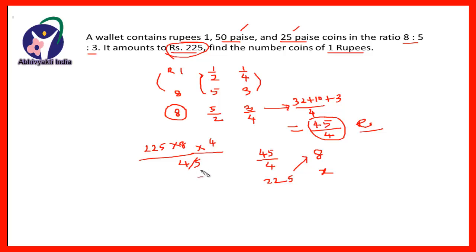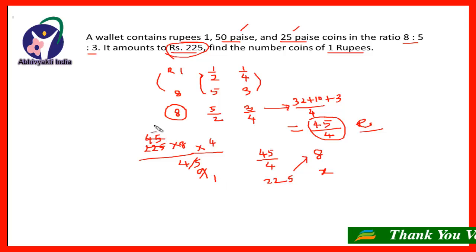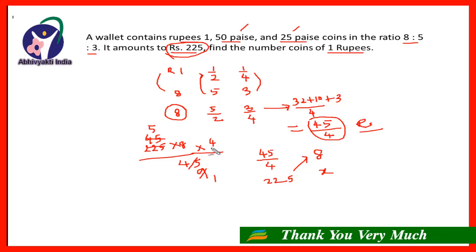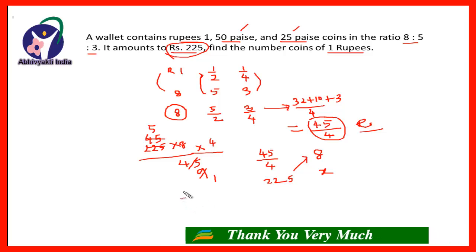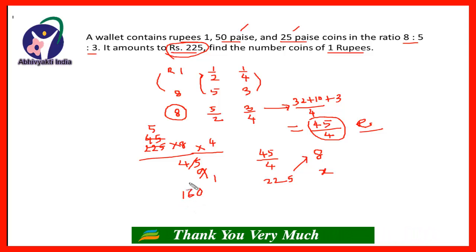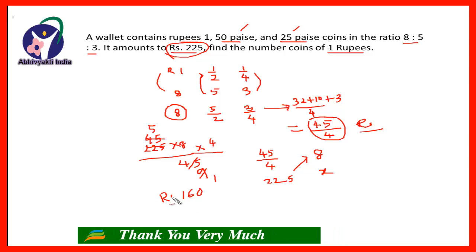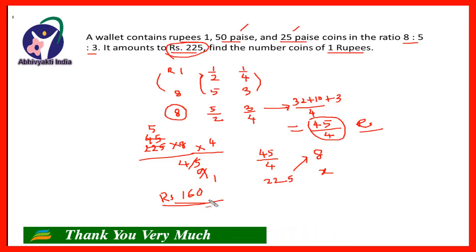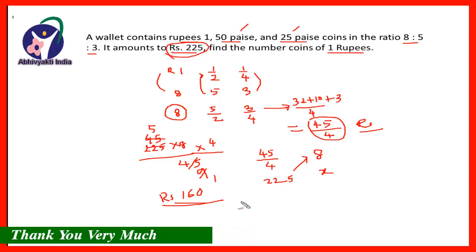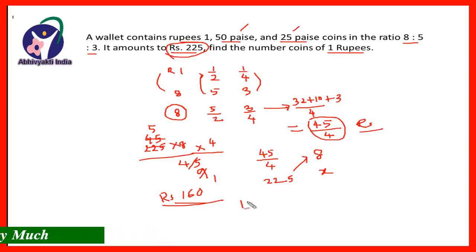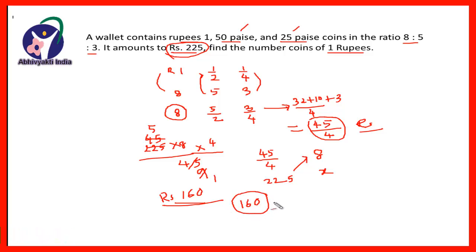So 5×9 = 45, and 5×4 = 20, 5×5 = 25, giving 5 × 8 × 4 = 160. So rupees 1 amounts to 160 rupees, and therefore the total number of 1-rupee coins is 160 ÷ 1 = 160. The total number of coins of rupees 1 is 160.